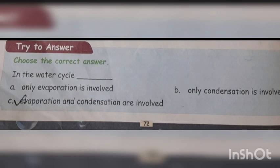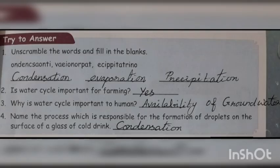Next, page number 72, Try to Answer. Choose the correct answer: in the water cycle, the three options given are - a) only evaporation is involved, b) only condensation is involved, c) evaporation and condensation are involved. Which one is correct? The answer is c: evaporation and condensation are involved. Moving to page number 73, Try to Answer.